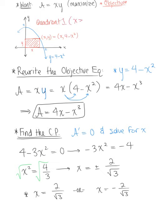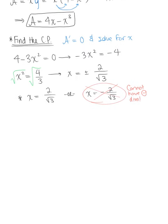So we know that in quadrant one x must be greater than or equal to zero. So this shows us that we cannot have a negative dimension. So we can exclude that solution and state that x being equal to 2 by the square root of 3 is going to maximize the area. So this dimension will maximize the area.